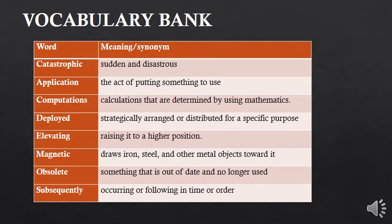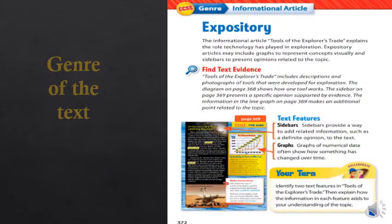To summarize the vocabulary meanings: catastrophic means sudden and disastrous; application is the act of putting something to use; computations are calculations determined by using mathematics; deployed means strategically arranged for a specific purpose; elevating means raising to a higher position; magnetic means drawing iron, steel, and other metal objects toward it; obsolete means out of date and no longer used; subsequently means occurring or following in time or order.